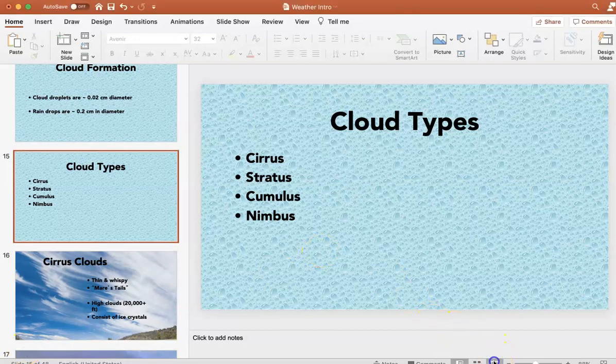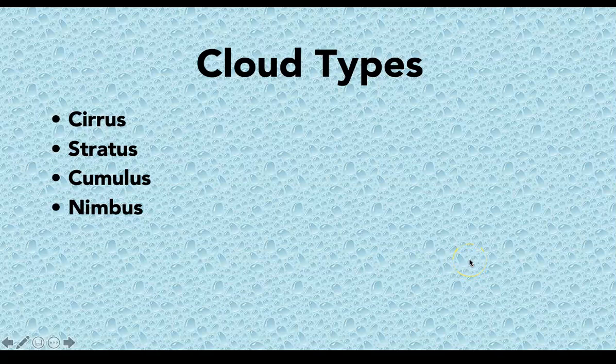Now we want to discuss the various cloud types. This is a simplified list, by far. I've broken it down into four main categories: Cirrus, Stratus, Cumulus, and Nimbus. We're going to show you what they look like, give you some characteristics of them, and when possible, tell you what kind of weather to expect because of them.